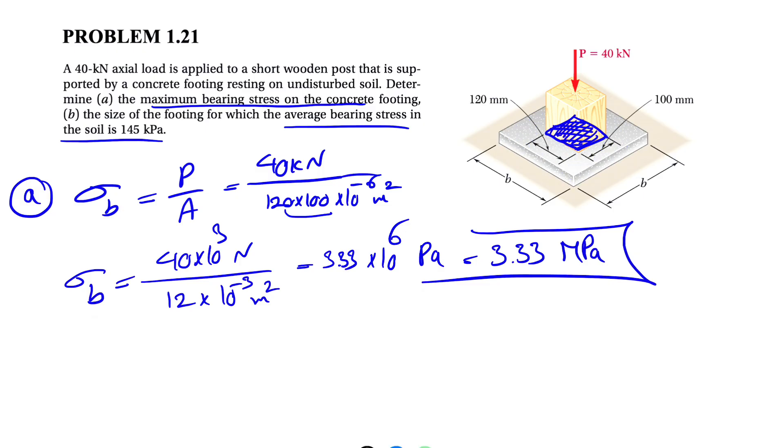So in part B, we have to find the size of the footing for which the average bearing stress in the soil is 145. So now we have to find the average bearing stress in the soil.